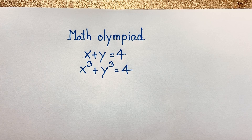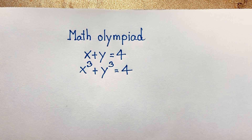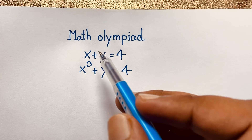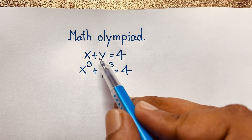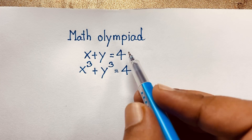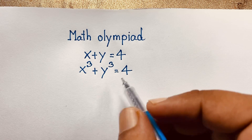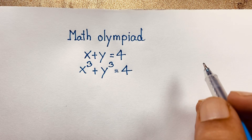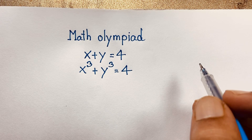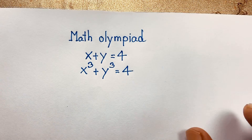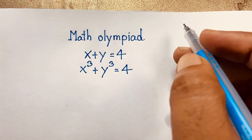Hello everyone, welcome to Rasha's classroom. Today we are solving an interesting math Olympiad question: x plus y is equal to 4, x cubed plus y cubed is equal to 4, and x times y is equal to what? How to solve this interesting math Olympiad question.